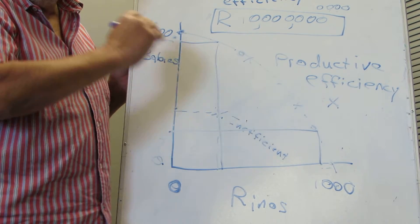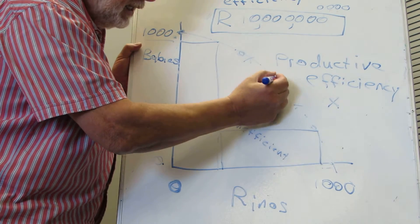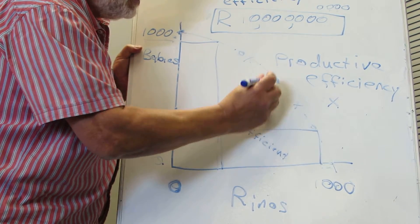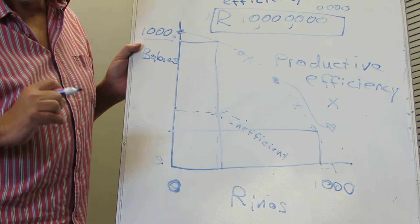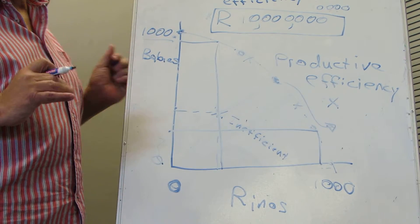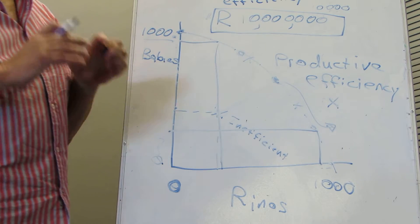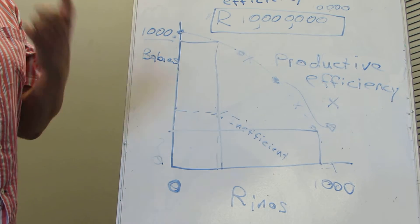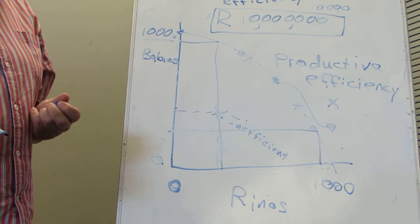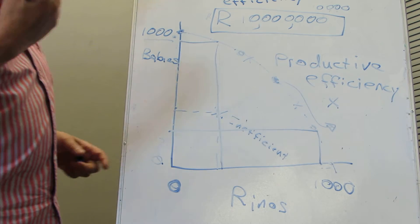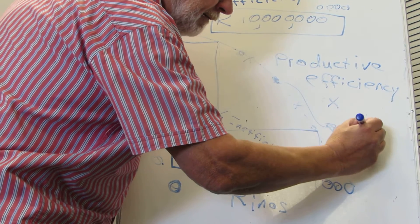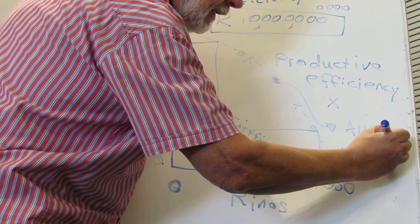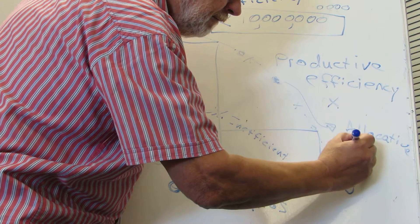So somewhere over here there's an optimum point for the society. And let's say it's this point. We call that point allocative efficiency. So that is where this money is allocated to optimize the value to the society. So that's just something else that you must remember. And that is the allocative efficiency.